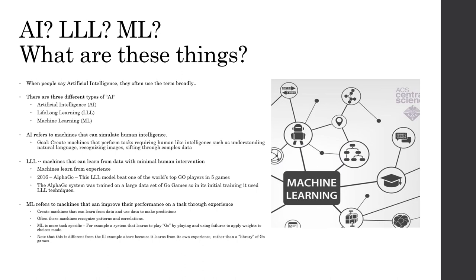Machine learning can involve turning a computer loose to try a specific task billions of times, continuously refining and learning from its mistakes. Going back to the AlphaGo example — after it processed the huge data set using lifelong learning techniques, it then began using machine learning techniques to learn from its failures and apply weights.